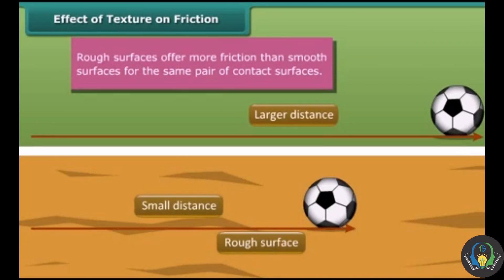This shows that the rough surface offers more friction than smooth surfaces for the same pair of contact forces. This example also proves that friction depends on the texture of contact surfaces.